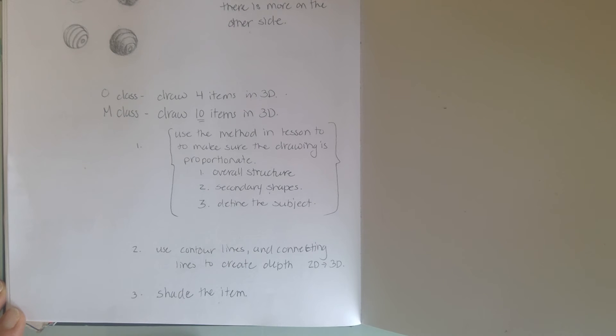If you're in the old class, you're going to draw four items in 3D. If you're in the M class, you're going to draw ten items in 3D in your sketchbook. First, use the method in the previous lesson to make sure the drawing is proportionate. Step one is the overall structure - is it a circle, is it a rectangle, what space does the object take? Then draw in the secondary shapes, and finally define the subject.